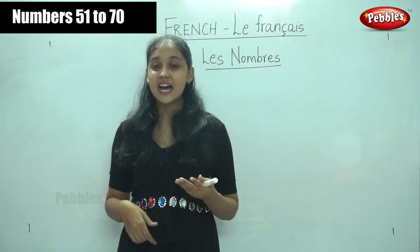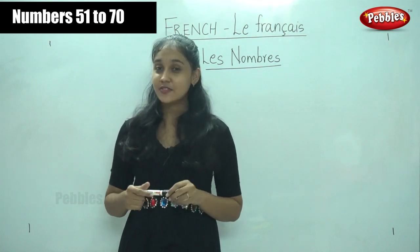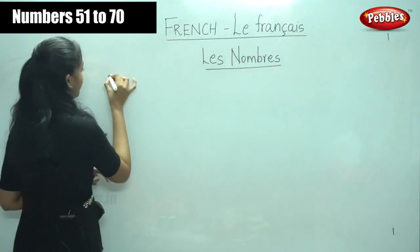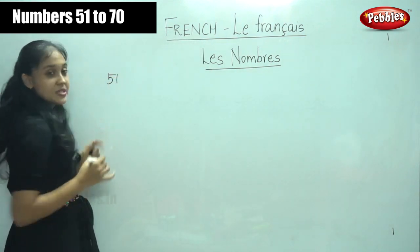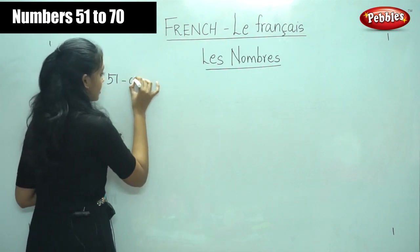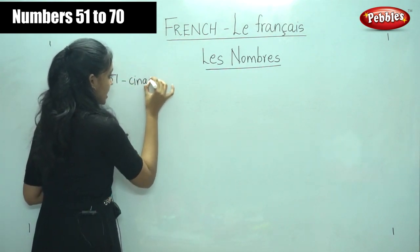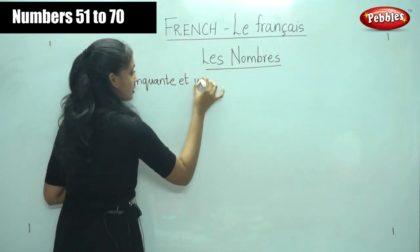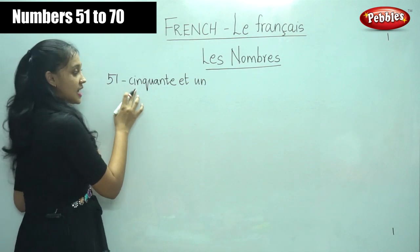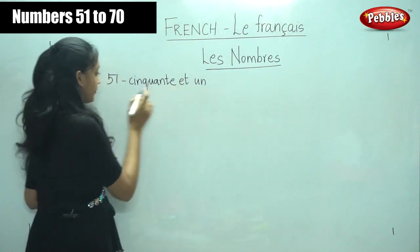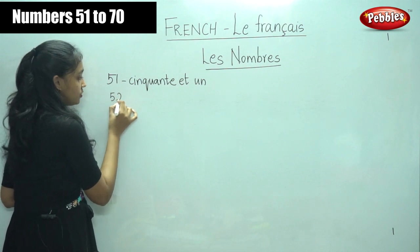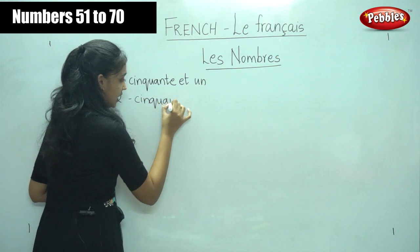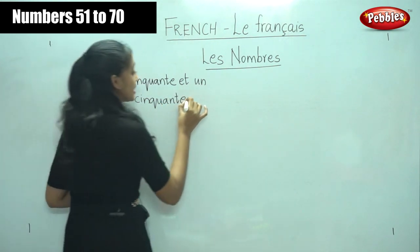Do you remember numbers 51 to 60 that we learnt? Can we write that once again? So, what did we say for 51? For 51 it is cinquante et un. For 52, it is cinquante deux — cinquante which is 50, and for 2 it is deux.